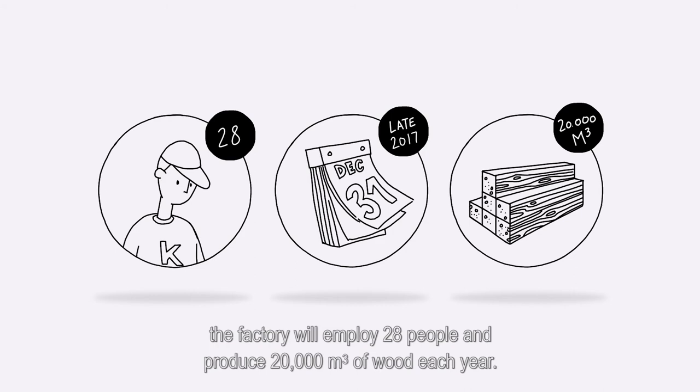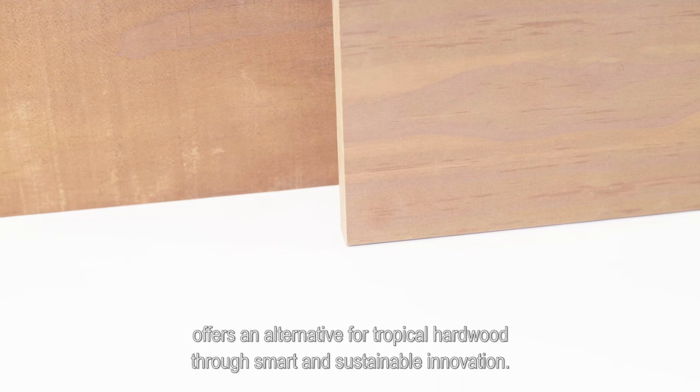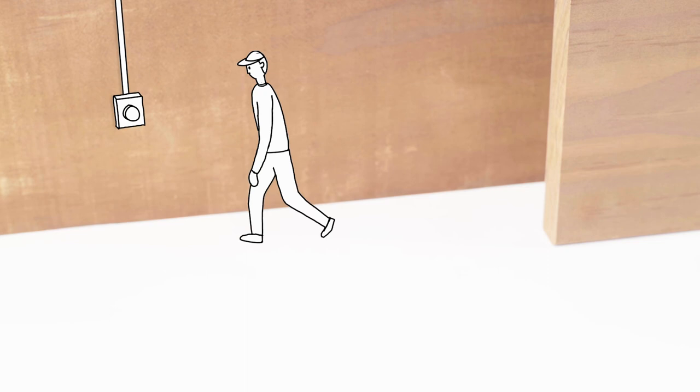With production scheduled to commence in late 2017, the factory will employ 28 people and produce 20,000 cubic meters of wood each year. 2017's Newcomer of the Year offers an alternative for tropical hardwood through smart and sustainable innovation. Welcome to Flanders, Kebany.